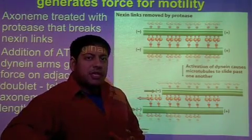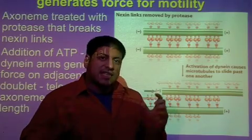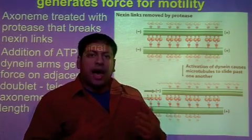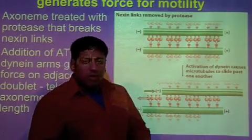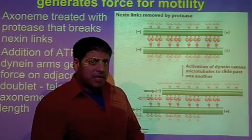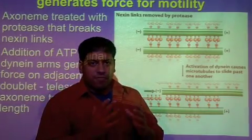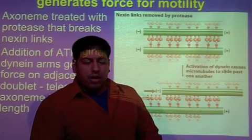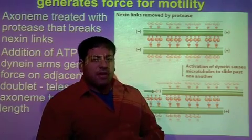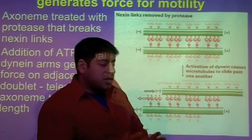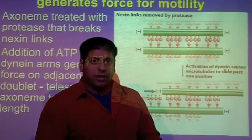From the lecture, we saw that this experiment demonstrates how dynein moves along microtubules. The experimental setup is to take a sperm tail and strip it of the plasma membrane. When you strip the plasma membrane, you use detergents, leaving you with just the protein structure. The protein structure alone, minus the plasma membrane, is what we call the axoneme.